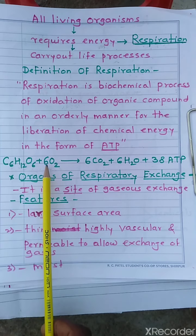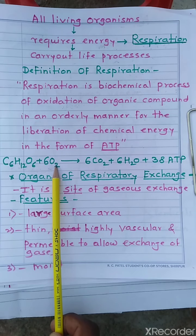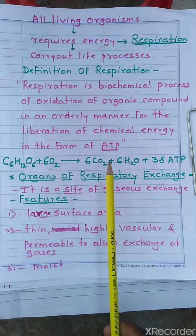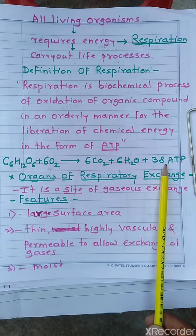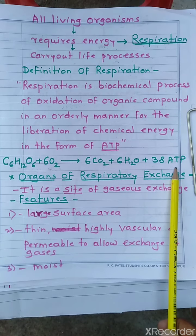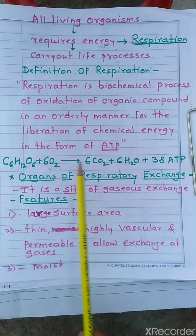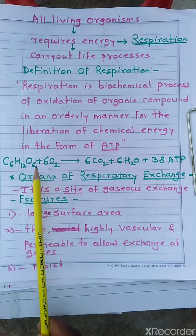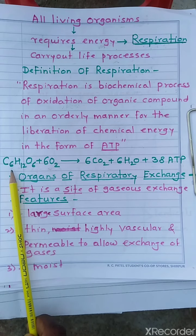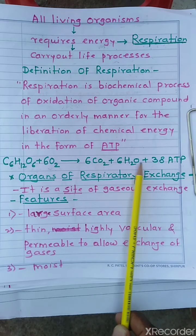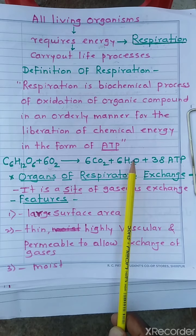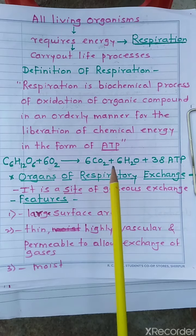The combination of glucose and oxygen gives out 6 molecules of carbon dioxide and 6 molecules of water, and energy is released. This released energy gets stored in the form of ATP — adenosine triphosphate. For the oxidation of one glucose molecule, 6 oxygen molecules are required, and after complete oxidation, 38 ATP molecules are released. Therefore, respiration is also called an energy-releasing process.